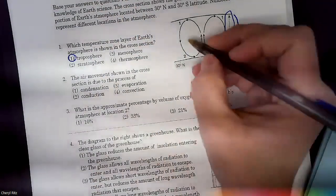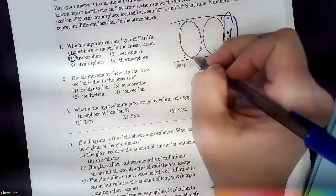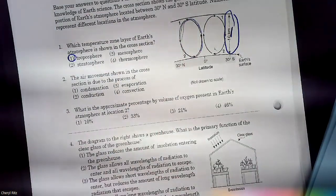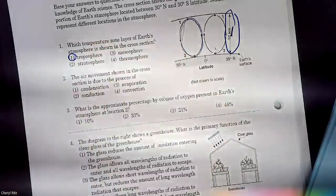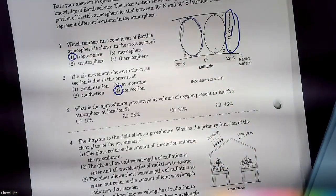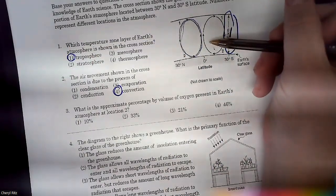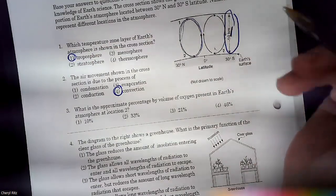Air movement, shown in the cross section, is due to the process of this whole circle situation. The air going up and then back down. What is that again? Not condensation. Not conduction. That's touching. Convection. Warm stuff rises. Cold stuff sinks. And guys, I want to give you a hint. This circle stuff is convection. Anytime you see it, just convection.